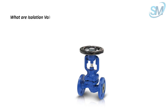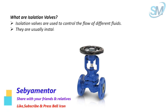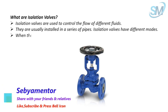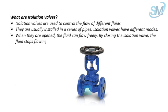Isolation valves are used to control the flow of different fluids. They are usually installed in a series of pipes. Isolation valves have different modes — when they are opened, the fluid can flow freely. By closing the isolation valve, the fluid stops flowing.